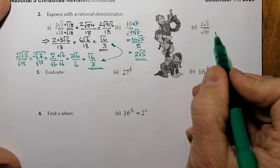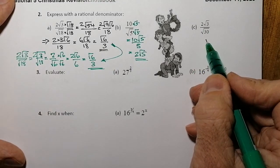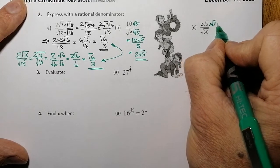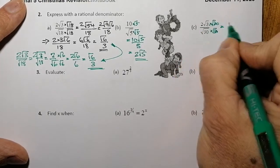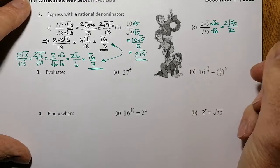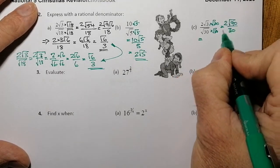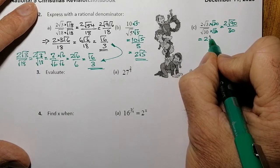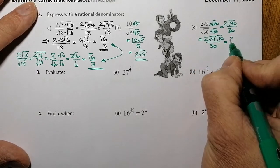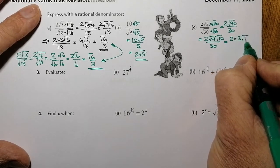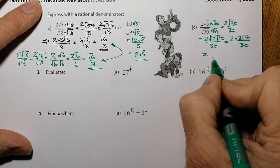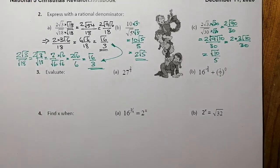For 2 root 3 all over root 30: multiply top and bottom by root 30, giving 2 root 90 on the top and 30 on the bottom. Simplifying root 90 as root 9 times root 10 gives 2 times 3 root 10 all over 30, which is 6 root 10 over 30. Cancelling gives root 10 over 5 — that's my final answer.